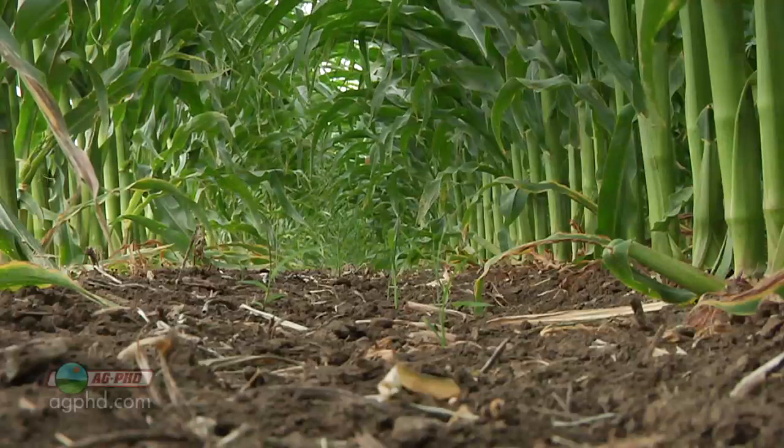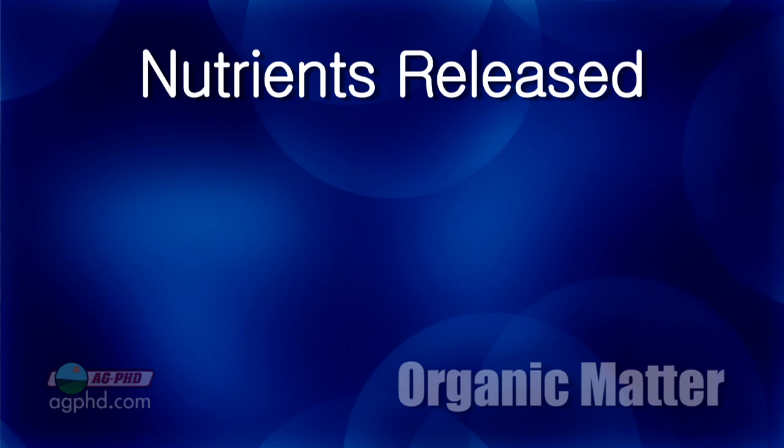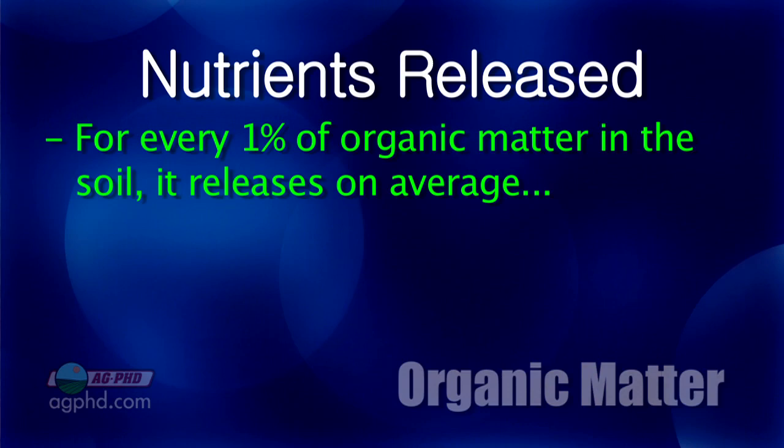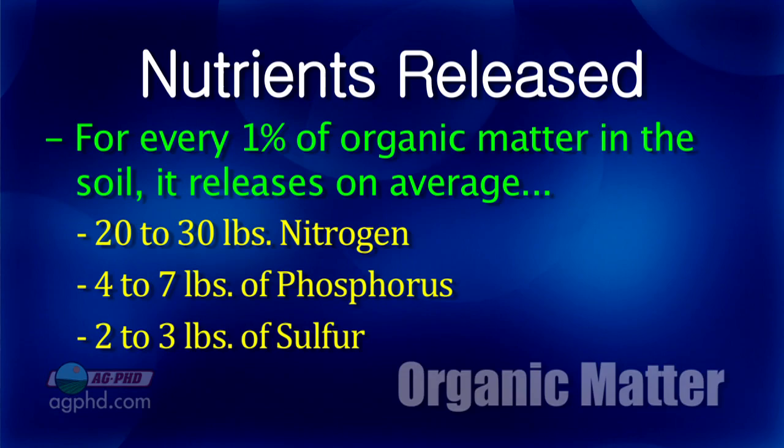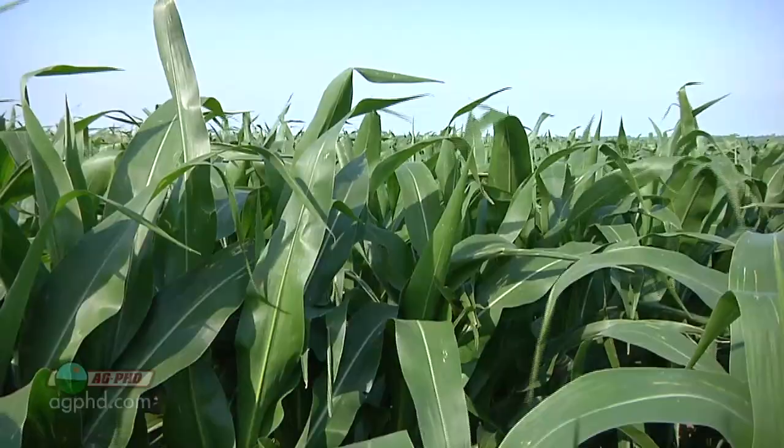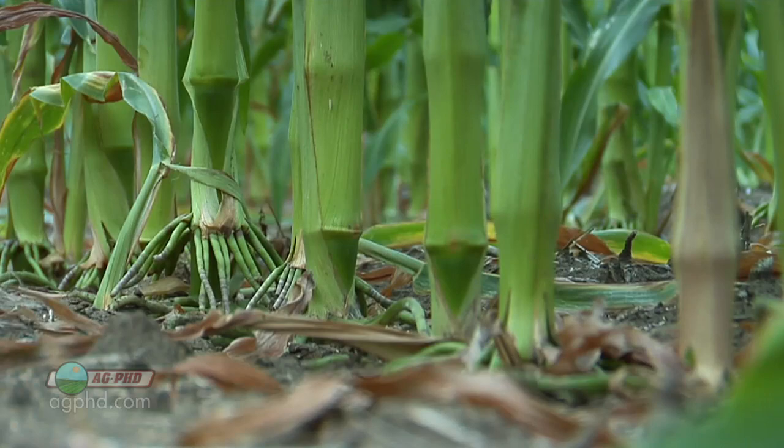For every one percent of organic matter you have in your soil, on average you'll have mineralization in summer amounting to 20 to 30 pounds of nitrogen, four to seven pounds of phosphorus, and two to three pounds of sulfur. Just think if you had seven or eight percent organic matter - a tremendous amount of free nutrients coming available for your next crop. You'll have more mineralization if you have more heat, microbial activity, and at least a little moisture. You want a healthy soil and decent growing conditions for more to come available.